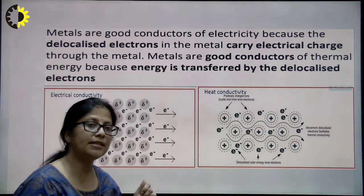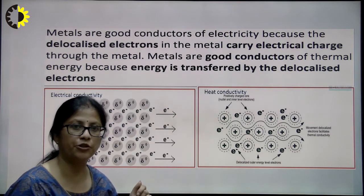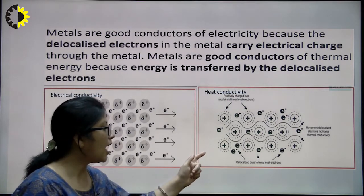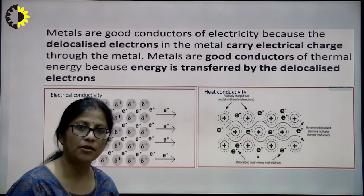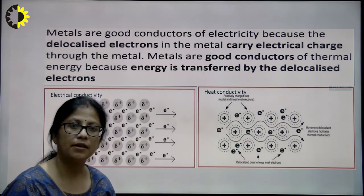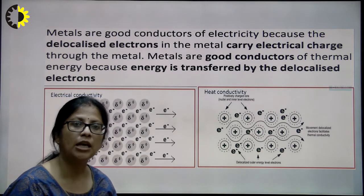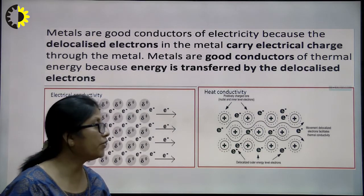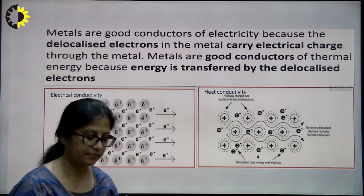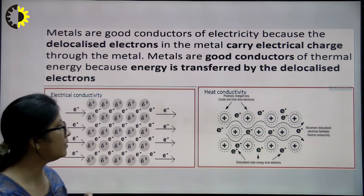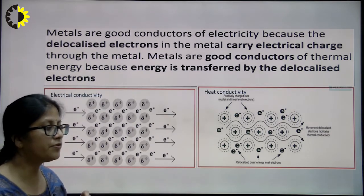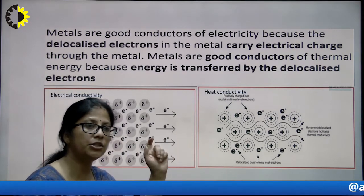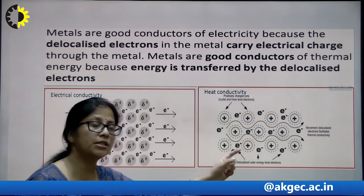When we increase the temperature, the kinetic energy as well as the vibrations of the positive lattice or positive kernels increases, which causes an obstruction in the free-flowing path of the electrons. Hence, conductivity decreases on increasing the temperature. Heat energy is transferred from one end of the metal to the other because heated electrons gain kinetic energy and move from the hotter end towards the colder end.